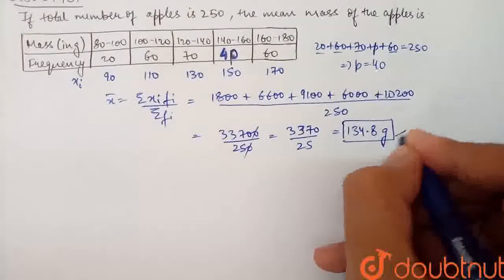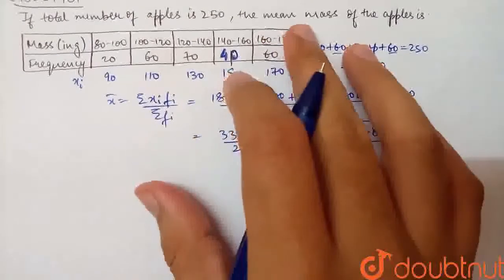The mass was given in grams, so 134.8 grams will be the mean mass of the apples.